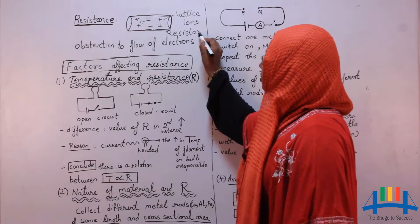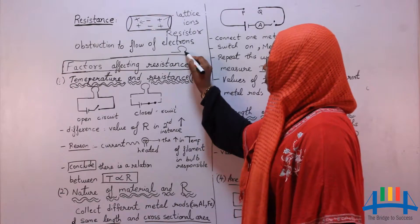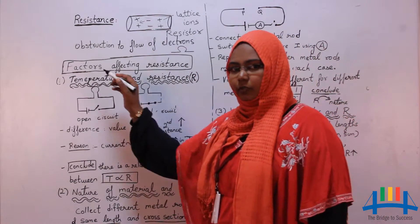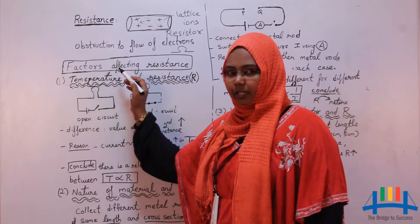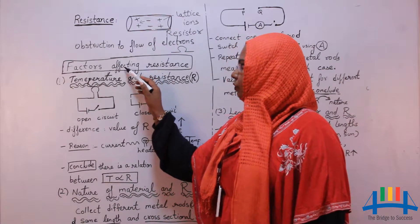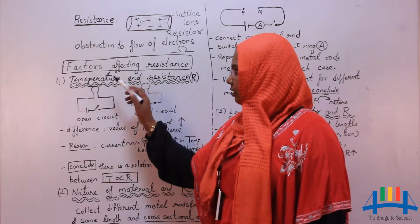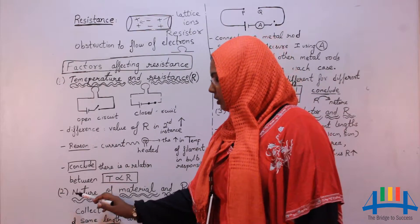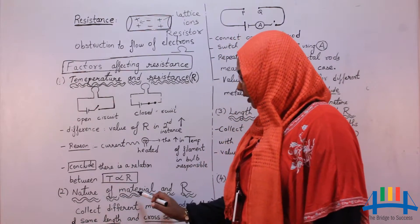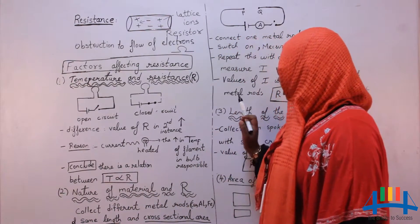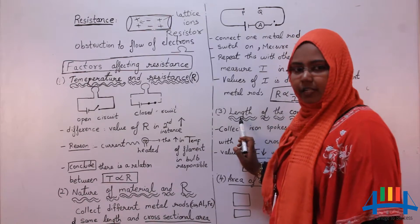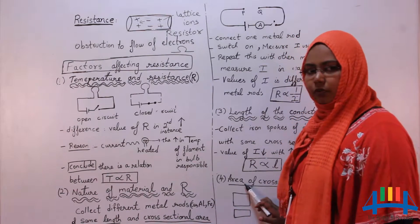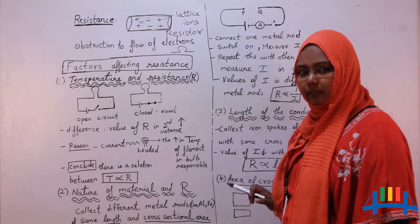The unit of resistance is ohms. Now we will discuss about the factors affecting resistance. There are four factors which affect resistance: temperature and resistance, nature of material and resistance, length of the material and resistance, and area of cross-section and resistance.